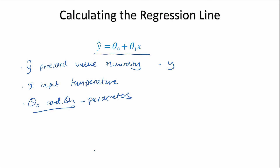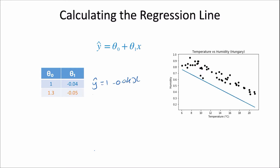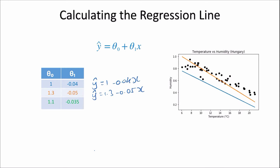For example, if theta 0 is 1 and theta 1 is minus 0.04, we get a regression line of y-hat equals 1 minus 0.04x. If theta 0 is 1.3 and theta 1 is minus 0.05, we get y-hat equals 1.3 minus 0.05x. And if theta 0 is 1.1 and theta 1 is minus 0.035, we get y-hat equals 1.1 minus 0.035x, each plotted on the graph.